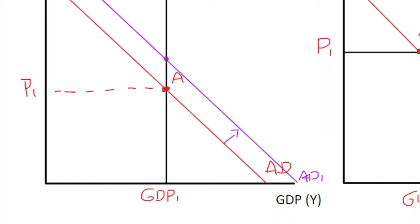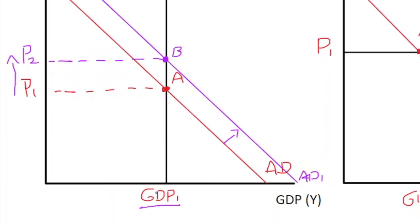We draw in a new equilibrium point B. Under classical conditions, the price level increases to P2 — so there is an increase in prices — however at point B we have the exact same real output level. So output doesn't change.